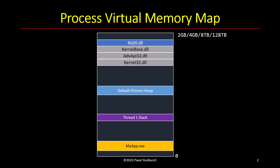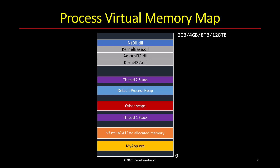The heap manages small memory allocations — ones that are not on page boundaries, not necessarily chunks of four kilobytes. There could be other heaps as well; the default process heap is always there, but others can be created. There's also memory allocated generically via VirtualAlloc, whose purpose depends on what the developer was trying to do.